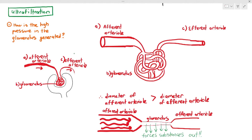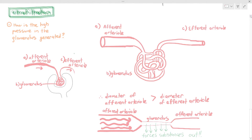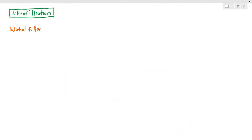Now we know that the pressure inside the glomerulus is very high due to the difference in diameter of the arterioles, and it forces substances out. But just because it forces substances out doesn't mean we want everything to leave the blood — we only want certain things to go out. That's why it's called filtration. Therefore, we need to ask the next question: what filters are present during ultrafiltration?